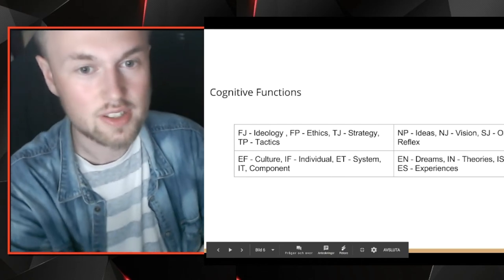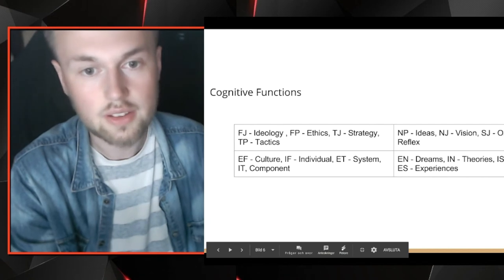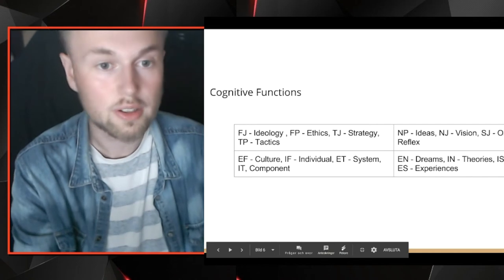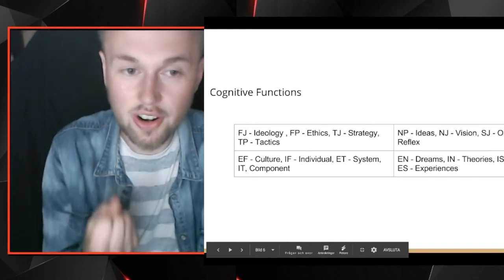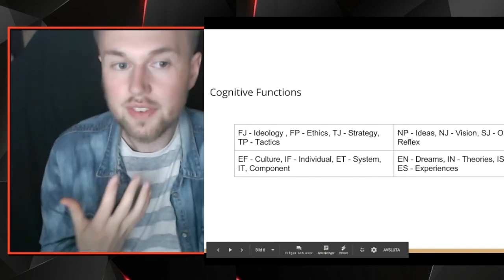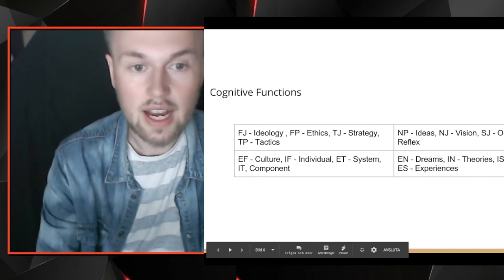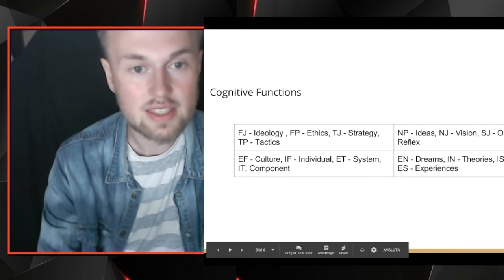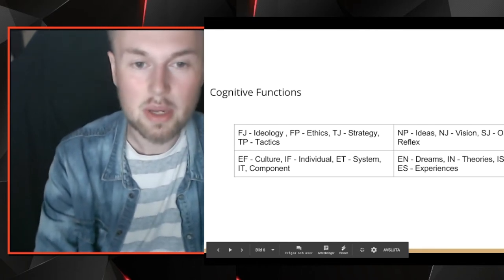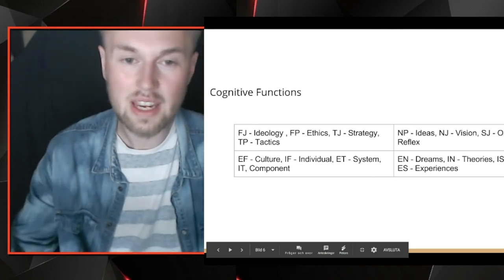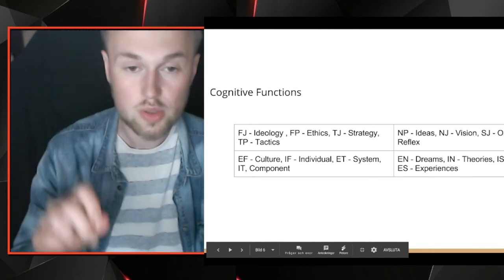Looking at the individual functions of the gut center — controlled discernment or conscientious decision-making: when you use ideology to determine the smart way to achieve something, you use feeling and judging (FJ). When thinking about what's ethical or good for the individual, feeling and perceiving (FP) comes in. Thinking and judging (TJ) involves strategy and working within a framework or system. Thinking and perceiving (TP) is about what's tactical in the situation, using the rules you see around you to your advantage.